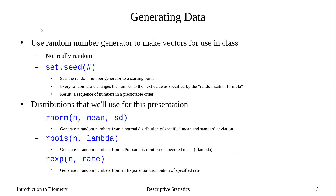What we're going to do is generate some random numbers that we will use throughout this presentation. When we make these random numbers, we're going to use the random number generators built into R. We're going to generate some normally distributed data, data from a Poisson distribution, and data from an exponential distribution. By doing all three, we should see how some of our data can look if it's non-normal. But before we generate these random numbers, we're going to do something called setting the seed.